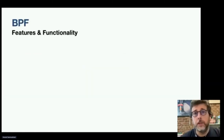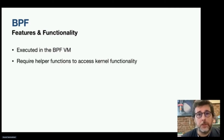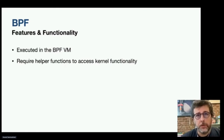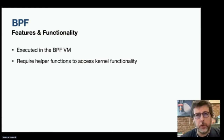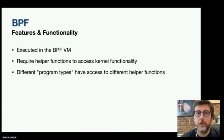Unlike kernel modules, BPF programs are executed in the BPF VM and require helper functions to access kernel functionality. BPF programs are attached to execution points within the kernel, and when a kernel event occurs at that point, the BPF programs are fired. Different execution points give you different kernel capabilities, which limits the scope of your programs, keeps them small, and fits neatly with the principle of least privilege.